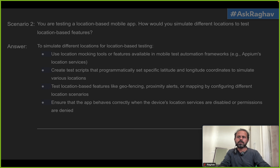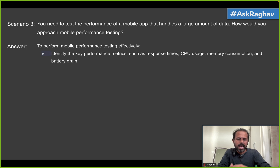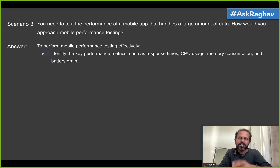That's how you can test this scenario. Moving on to scenario number three: you need to test the performance of a mobile app that handles a large amount of data — how would you approach mobile performance testing? The very first thing — common to any performance test, not just mobile — is to identify the key areas and metrics you need to capture and test. For example: response times, CPU usage, memory consumption, and battery drain, which is very specific to mobile devices.